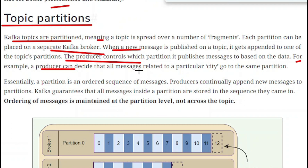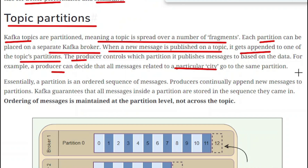If you want to store the messages of all the cities and you have a single topic with a single partition, then all the messages get stored on that single partition, which will impact performance. To avoid performance issues, you can split that particular topic into a number of fragments. Each fragment is called a partition, and each fragment is responsible for storing the information of a single particular city.